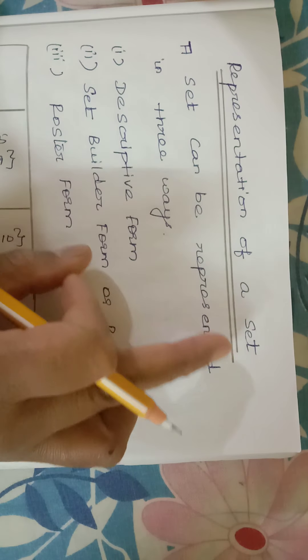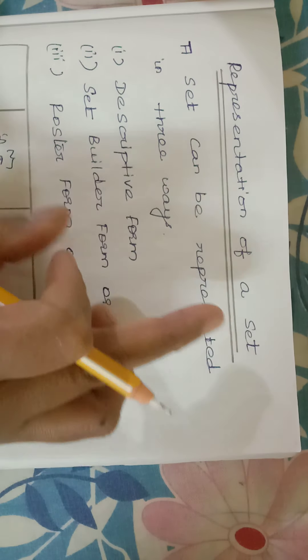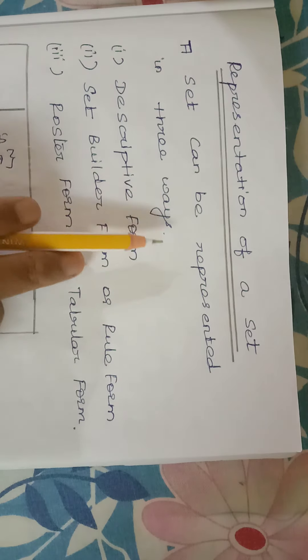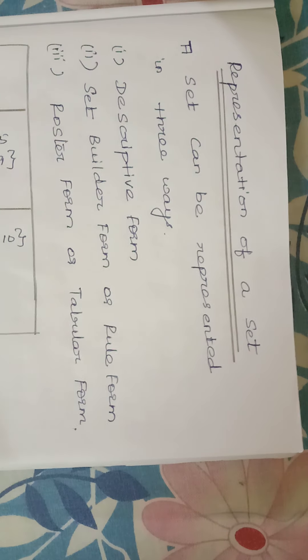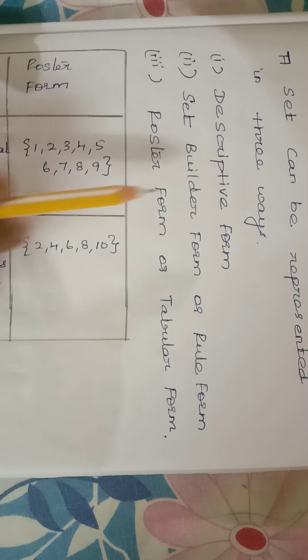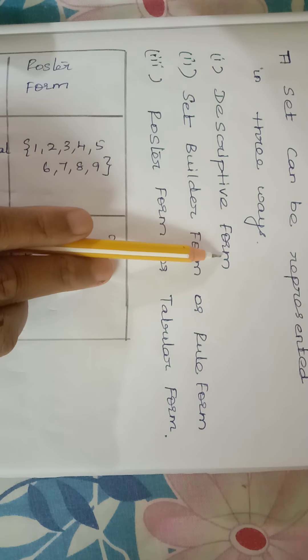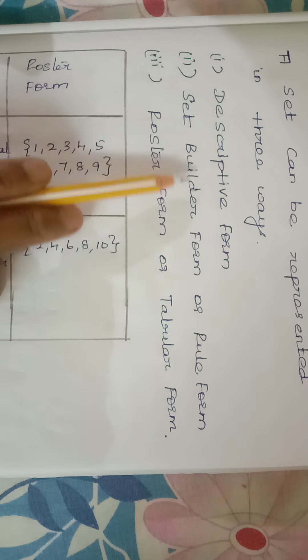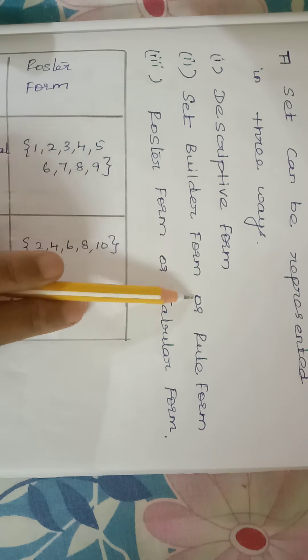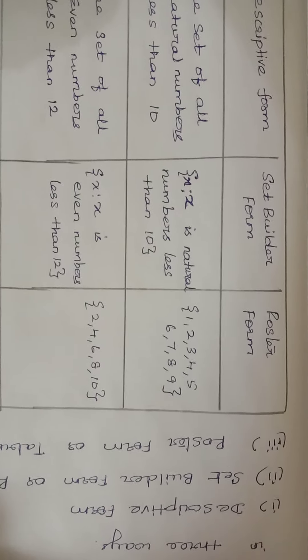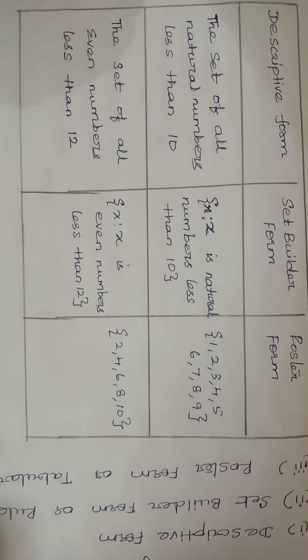Representation of a set — how can we represent a set? We can represent a set in three ways: descriptive form, set builder form (or rule form), and roster form (or tabular form). We will see examples of each.